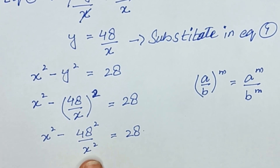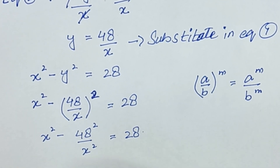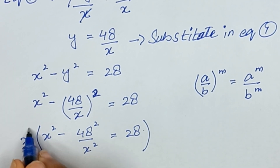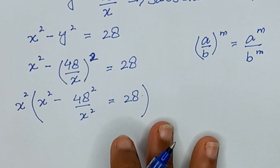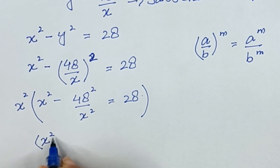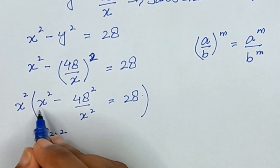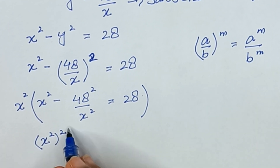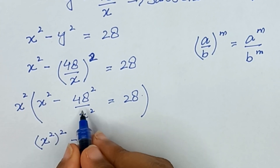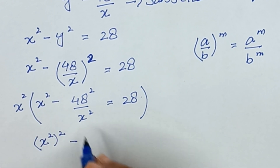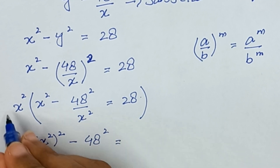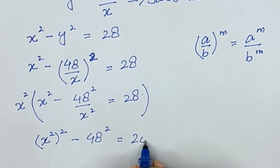To eliminate the denominator, we multiply the whole equation by x squared. This gives x to the power 4 minus 48 squared equals 28x squared, since x squared times x squared is x to the power 4, and the x squared terms in the fraction cancel out.